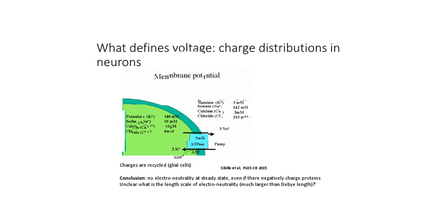We are going to concentrate our attention on what happens inside. What is the consequence of having more positive charge in an electrolyte for the voltage distribution and the distribution of charges? What is the consequence of having more positive charge in an electrolyte for neurons?